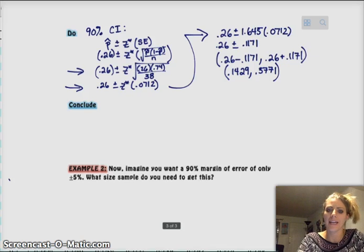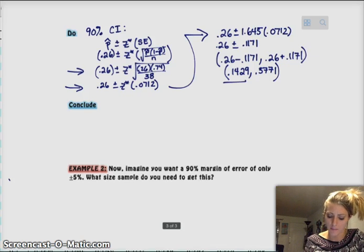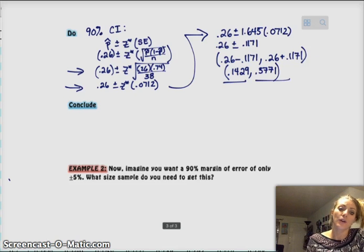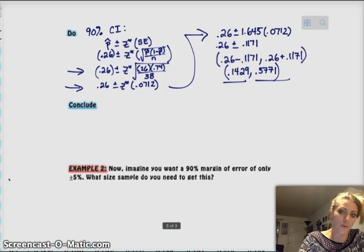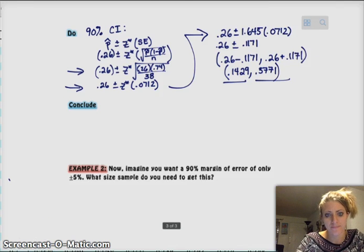So plugging everything in, we get the interval between 0.1429 and 0.3771. So to conclude, we would say we're 90% confident the true value of funny cat pictures on Google images is in between 0.14 and 0.38.